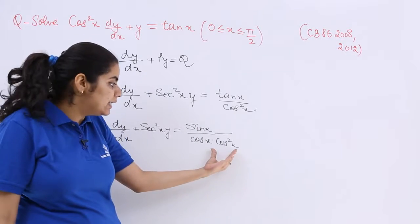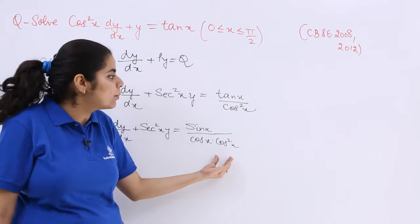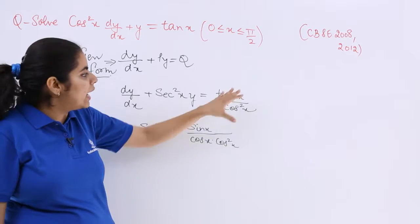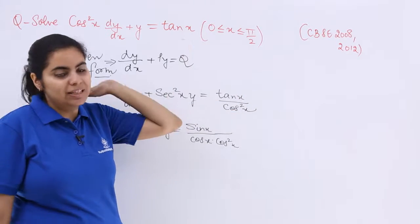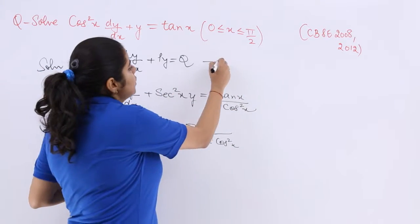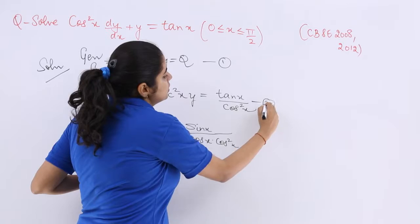Now it is up to me whether I keep it as cos²x in the denominator with cos x multiplied or keep it as is. Let's name these equations: equation 1 is the general form, equation 2 is the transformed equation, and equation 3 is the expression for Q.